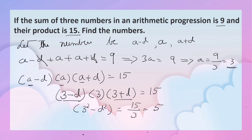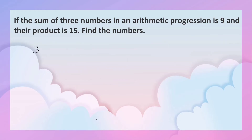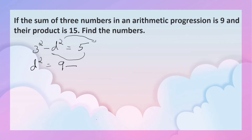Now we have 3 square minus D square is equal to 5. So D square is equal to 3 square minus 5, that is 9 minus 5, which equals 4. Therefore D is equal to plus or minus the square root of 4, so D is plus or minus 2.